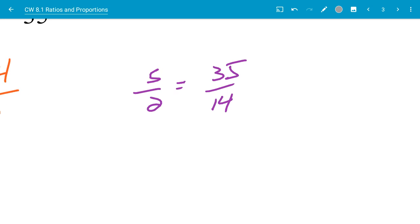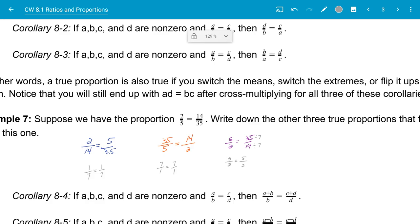And look at this one. I have 5 over 2 is equal to 35 over 14. Now, 5 over 2 is reduced. I can't reduce that anymore. But from 35 and 14, I can divide both by 7. So 35 divided by 7 is 5 and 14 divided by 7 is 2. So you can see there when you look at that, that all of those corollaries still give me true proportions.